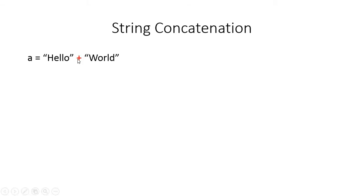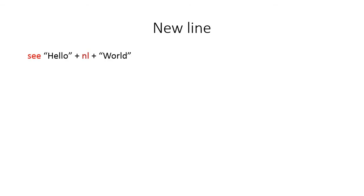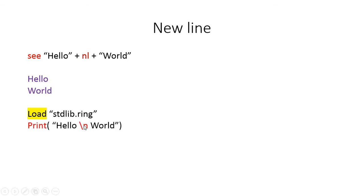For a new line, use 'nl' or '\n'. Note that '\n' can only be used with print commands, while 'nl' works with 'c', 'put', and 'print'. The output will show words on two separate lines.